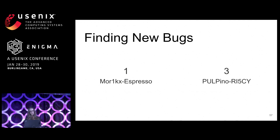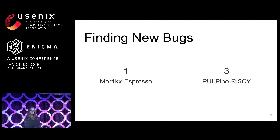We then explored two new designs not used in our property development. We found four new bugs. The MOR1KX Espresso is a next-generation OR1000 architecture design, and we found that a bug from the OR1200 persisted to this next generation — showing that properties developed for one design can be used to find bugs in future designs within the same architecture. We also explored a RISC-V architecture, from which none of our original bugs were drawn, and found exploitable bugs there too — showing that properties developed by studying other architectures are useful in finding exploitable bugs in a new architecture.